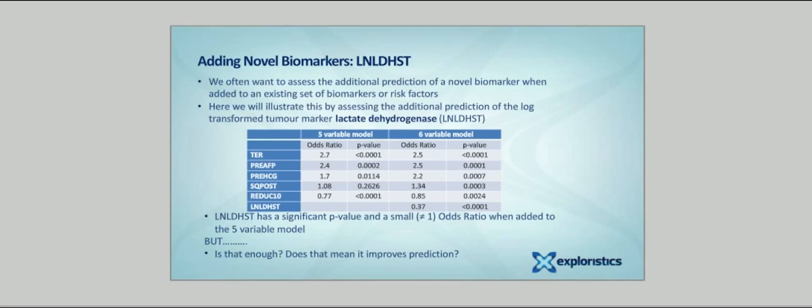We now turn to our third issue. Assessing the additional prediction of a novel biomarker when added to an existing set of biomarkers or risk factors, or, in general, the comparison of two different prediction equations. We will illustrate this by assessing the additional prediction of the log-transformed tumor marker lactate dehydrogenase, LN, LD, HST, when added to the five variables in the model discussed up to now. In the table, we fit all six predictors, and we see that lactate dehydrogenase has a small p-value and odds ratio much less than 1. This is the odds ratio shown in the reduction in the odds of tumor for unit increase in log lactate dehydrogenase. An odds ratio of 1, of course, meaning no effect. Remember, this is scale-dependent, and as this variable is log-transformed, a unit increase in the log scale might cover a large range of the data. Often, we might scale a continuous predictor to have unit variance. So, this new variable is significant. But is that enough to say it improves prediction?